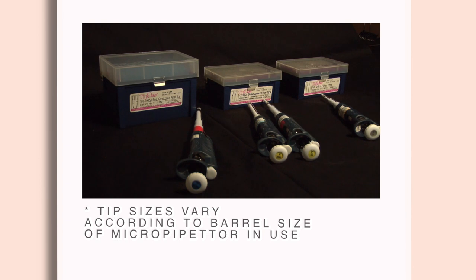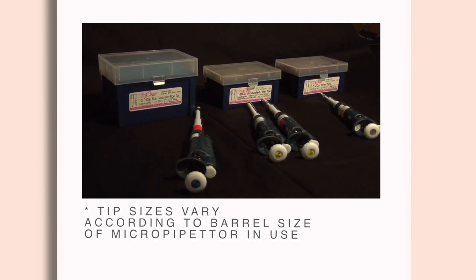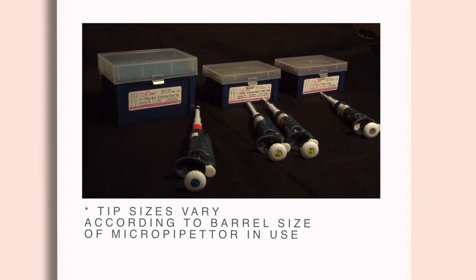Different micropipetters take different sized tips, depending upon the barrel size. P1000s use the largest tips, while the P200 and P20 use an intermediate-sized tip. The P10s use the smallest of tips.